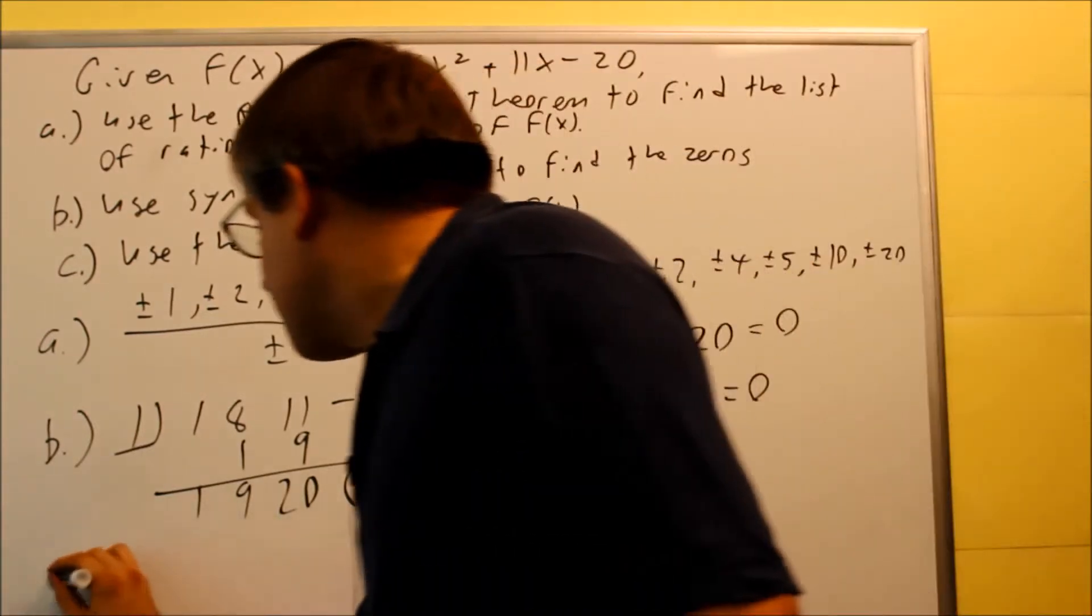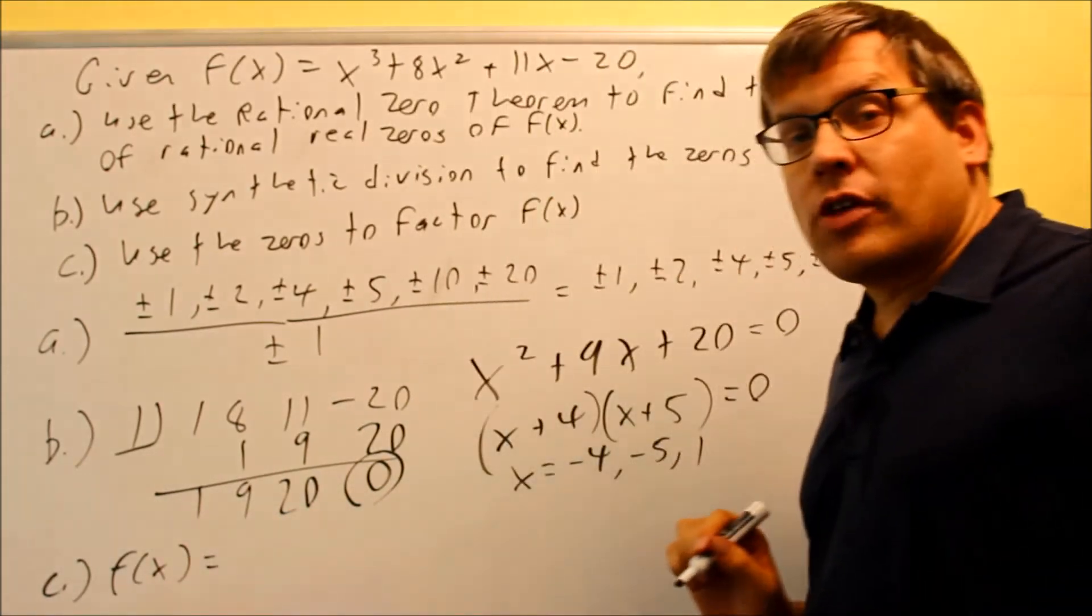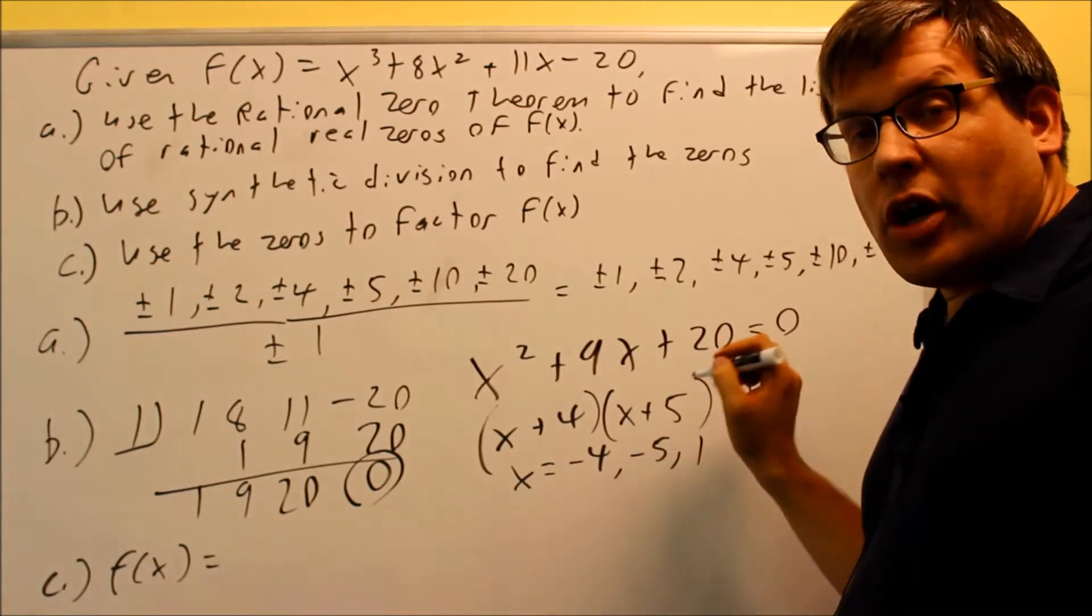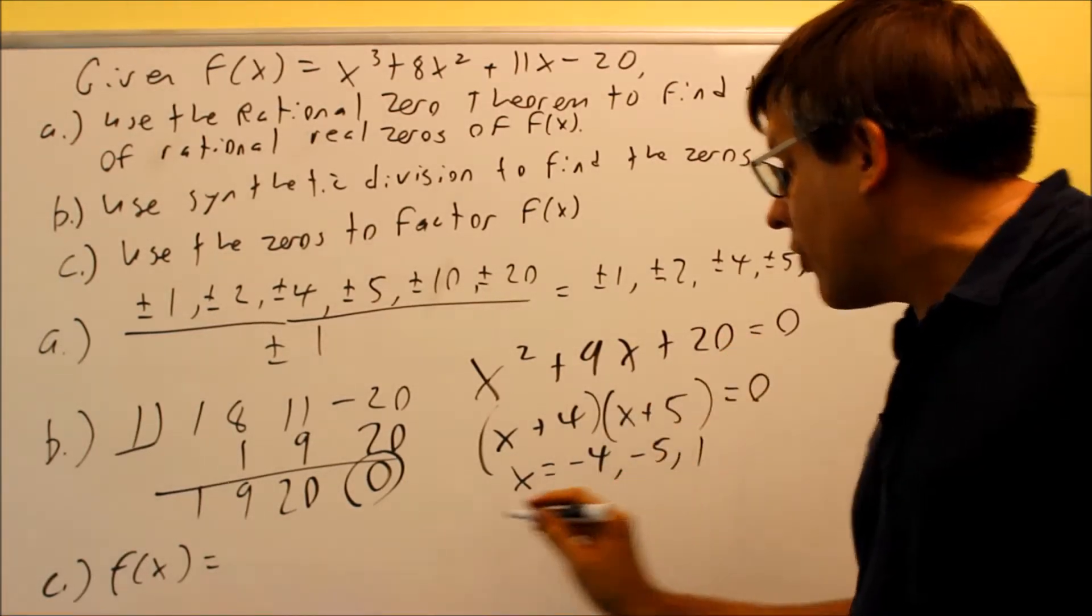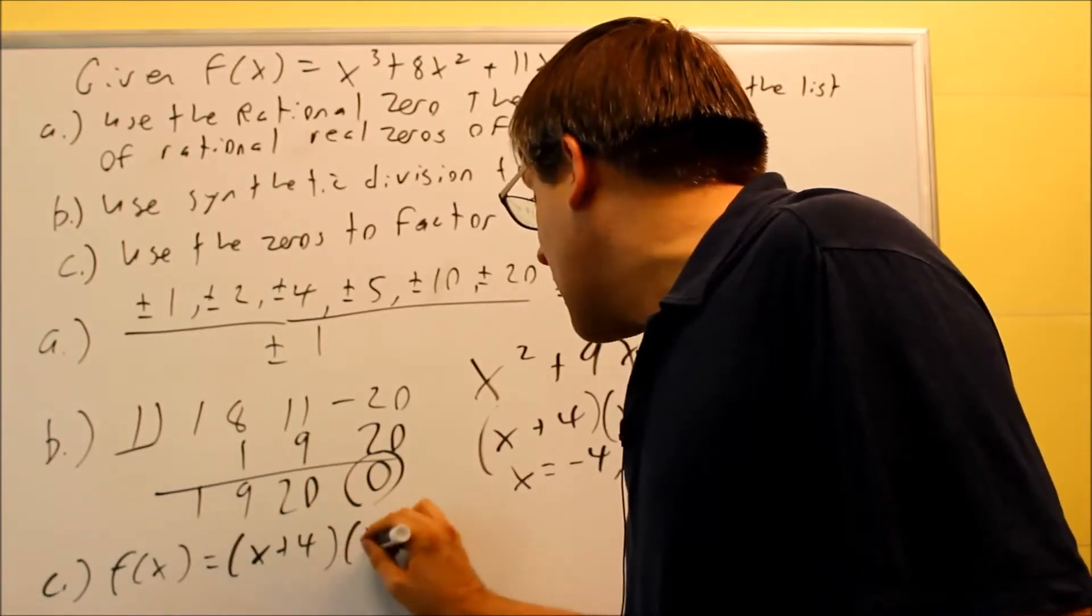Now the last step we want to factor f of x. So when you factor that one we're actually going to use this part right here. This part was already, we already factored this already. We know that that's definitely going to be part of my answer. So I have x plus four and x plus five.